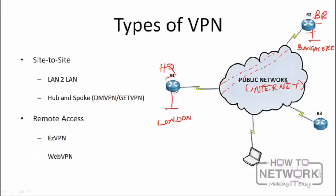Site-to-site VPNs can be simple LAN-to-LAN links or more complex hub-and-spoke scenarios where one hub connects to many spokes. Cisco has many VPN protocols for these scenarios, including the Dynamic Multi-Point VPN (DMVPN) and the Group Encrypted Transport VPN (GET VPN). However, these are beyond the scope of the ICND2 series.